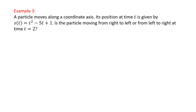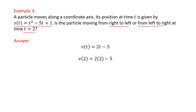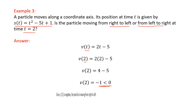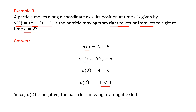Example 3: a particle moves along a coordinate axis. Its position at time t is given by s(t) = t² − 5t + 1. Is the particle moving from right to left or from left to right at t = 2? We calculate velocity as the first derivative, giving v(t) = 2t − 5. Replacing t = 2 gives −1. Since −1 is less than 0 (a negative value), we conclude the particle is moving from right to left.